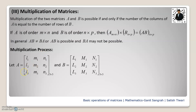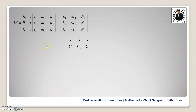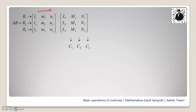Now we will see the multiplication process. Suppose we have matrix A of order 3 by 3 and matrix B of order 3 by 3, so the new matrix also has order 3 by 3 since the 3s match. When we do matrix multiplication, we use row versus column. The first row of matrix A is multiplied with the first column of matrix B, element by element, then we take the sum to get the first element of the result.